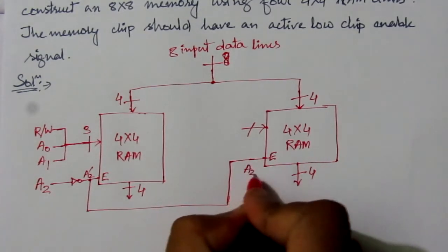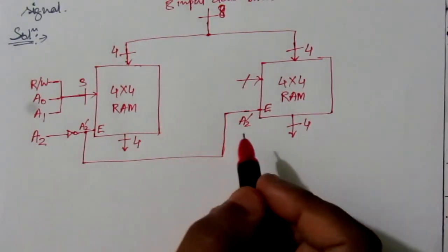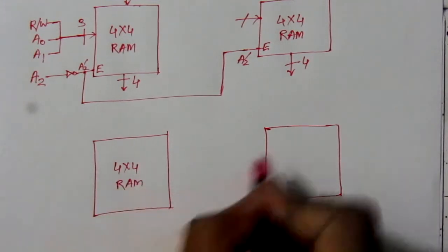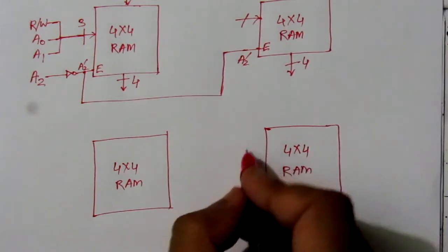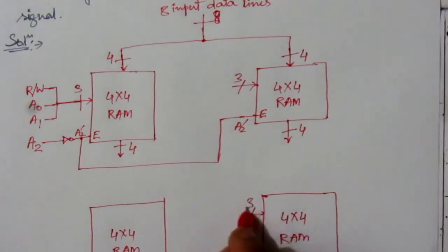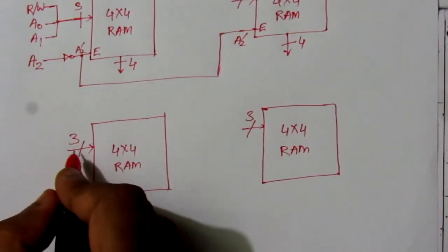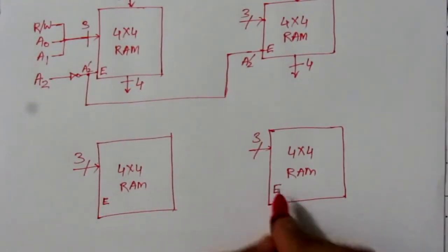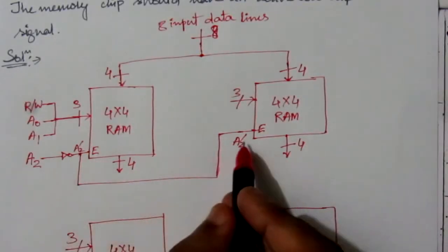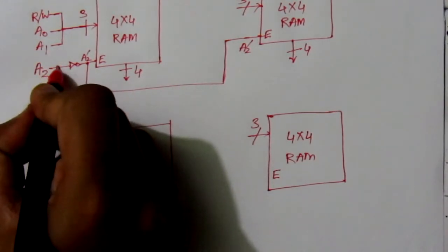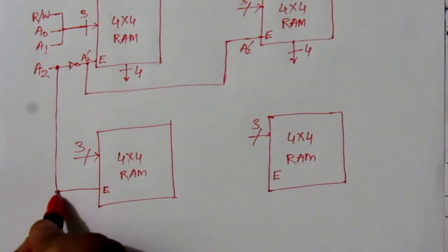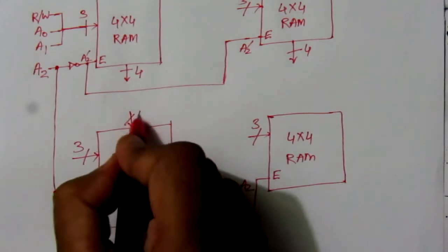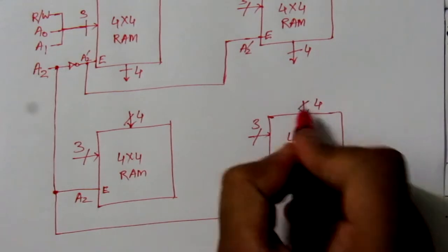We have drawn two four by four RAM units and now draw another two. These lower RAM units also have three control inputs: read/write, A0, and A1 — similar to the upper units — plus one enable input each. For the lower units, A2 is connected directly (not complemented) to their enable inputs.